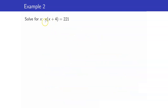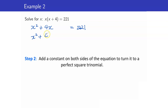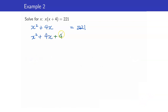Another example: x times the quantity x plus 4 equals 221. We want an x squared term, so we distribute first. We have x squared plus 4x equals 221. The constant term is already isolated, so we can keep it that way. The next step is to add the constant to make it a perfect square. Get the coefficient of x, which is 4, divide by 2 and square — that gives us 4 over 2 squared. Add the same thing to both sides, giving us 221 plus 4.